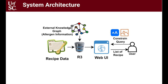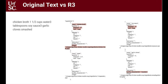Let us quickly understand the R3 format and how it enhances the input data. On the right-hand side of the screen, we see the original unstructured text document of the recipe, and on the left-hand side, we see the R3 representation for it. Here, the ingredient information is converted to a structured format, making it easier to understand the ingredient quantity, quality characteristic, and the allergen category associated with each ingredient.